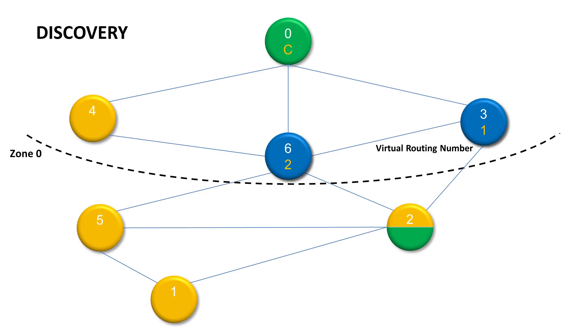By the way, zone number 0 means that you can get to these nodes with no routing hops. Then the coordinator assigns node number 3 to discover nodes in its neighborhood and assign them with VRN higher than 2. Number 3 discovers number 2 and assigns it with VRN 3.